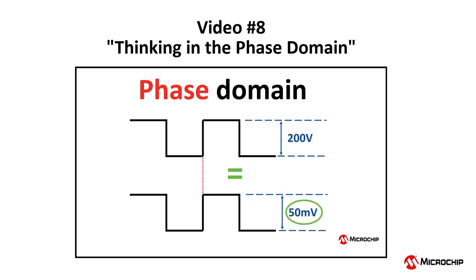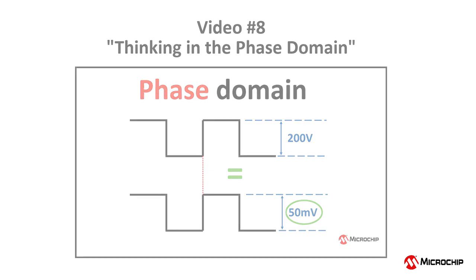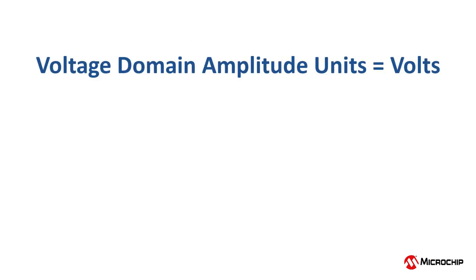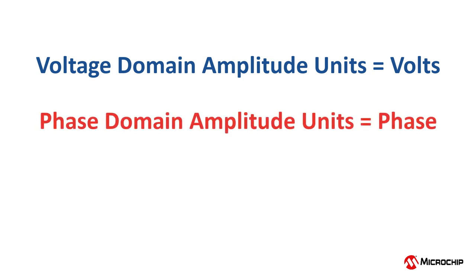The key thing to keep in mind here is that in the voltage domain, amplitude is described in volts, but in the phase domain, the amplitude is described in phase units.